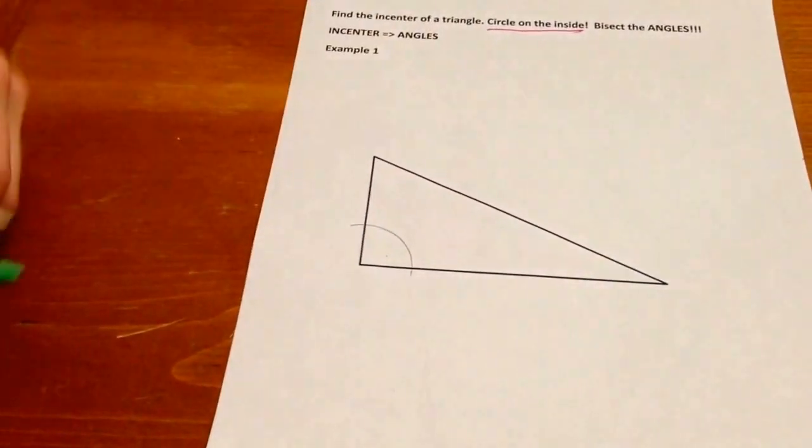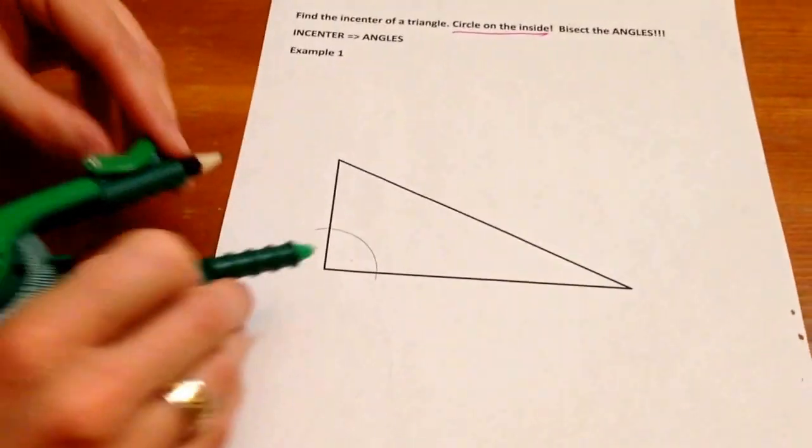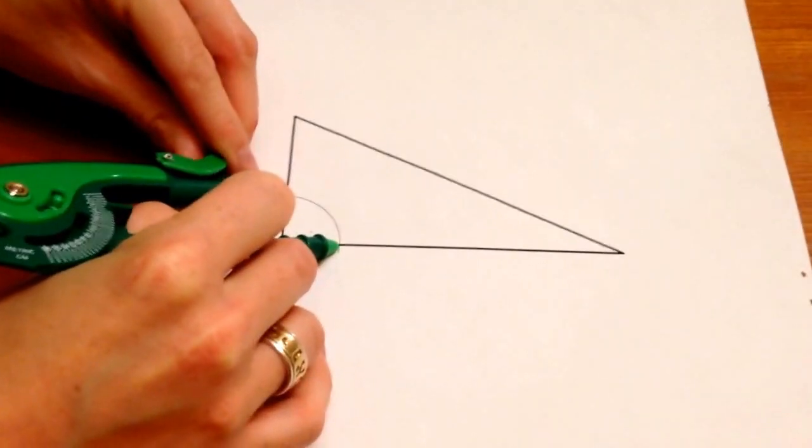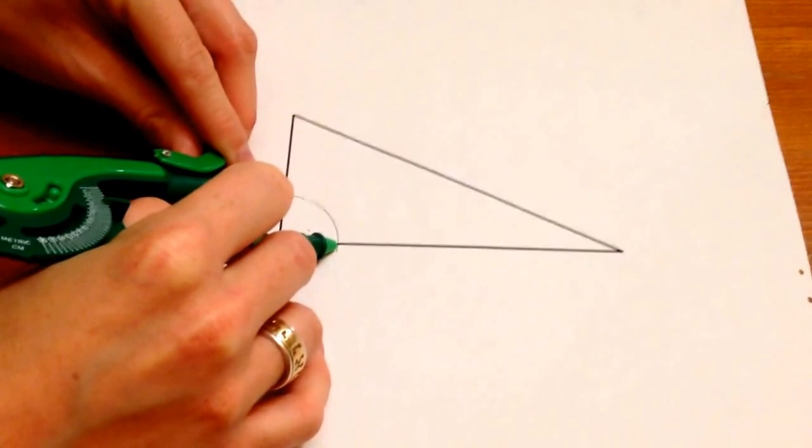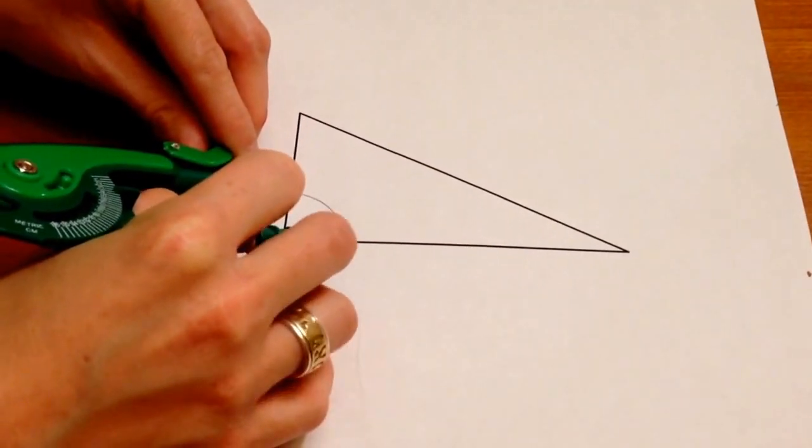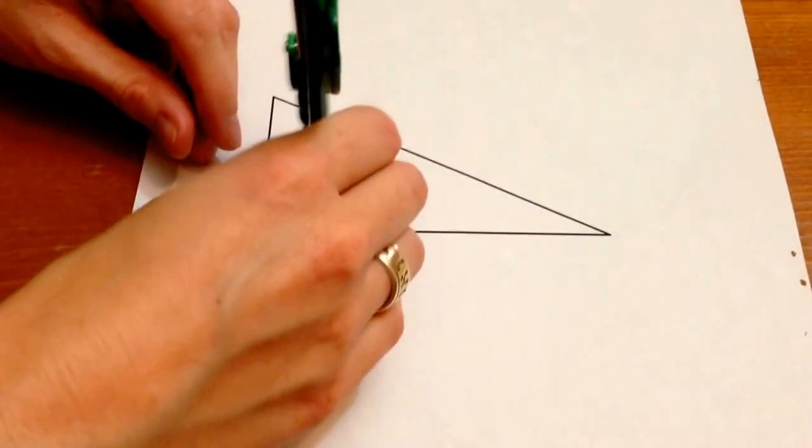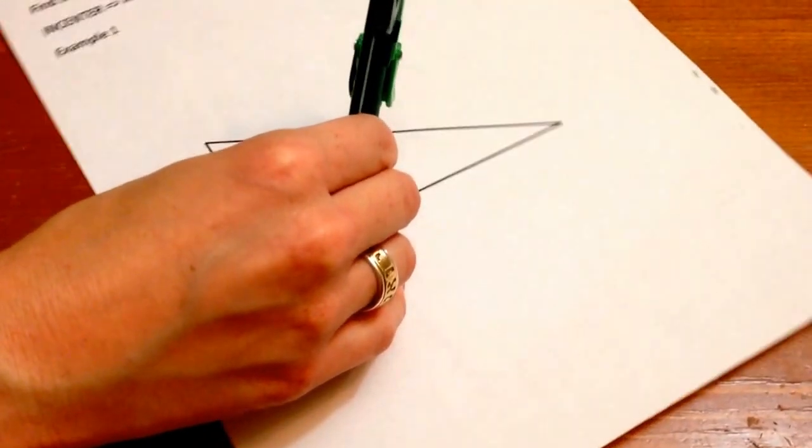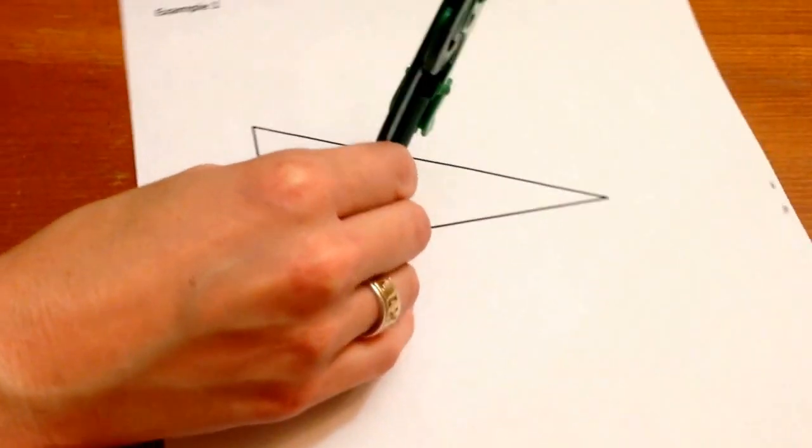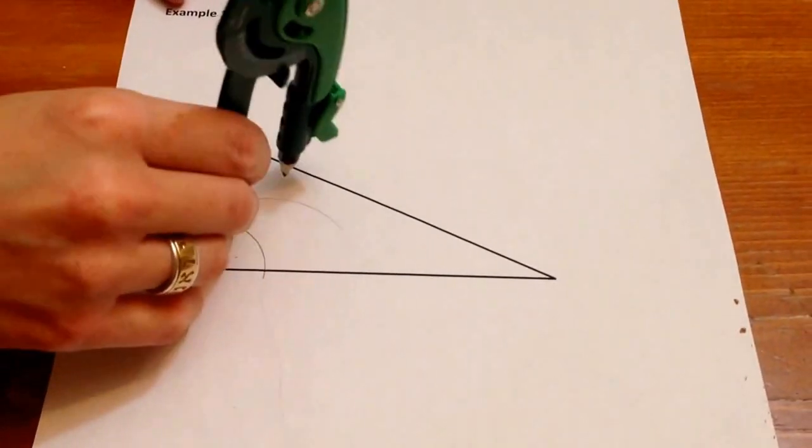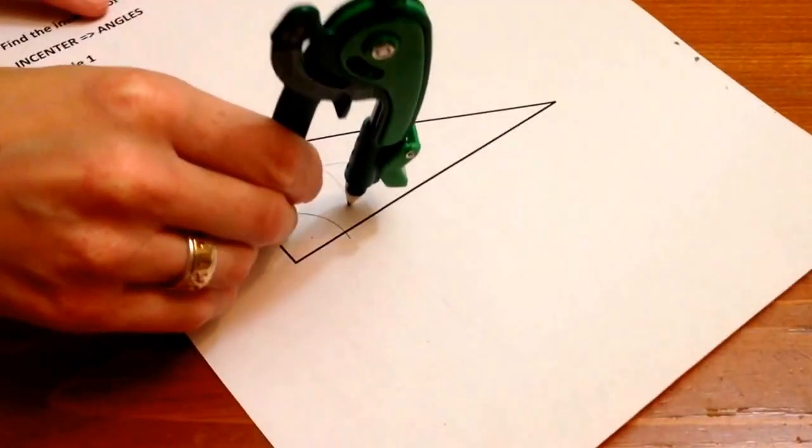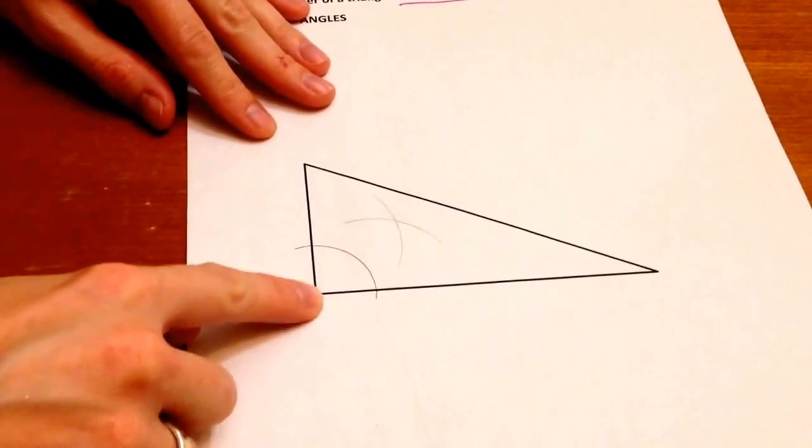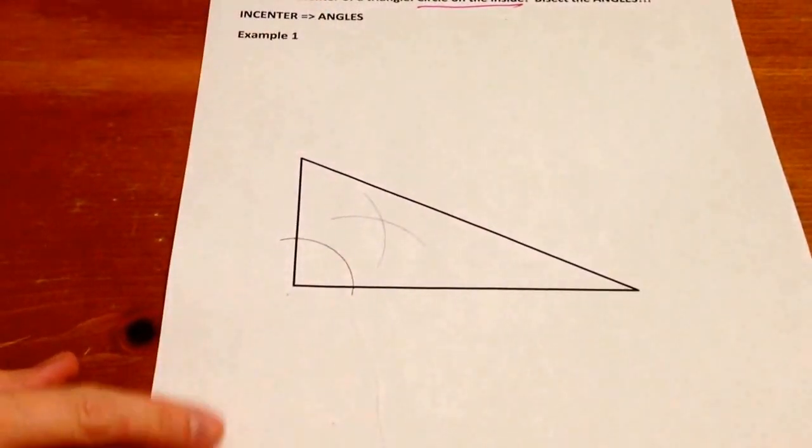Now that you have that semicircle, what you're going to do is open your compass and place it on both of the ends of that semicircle that you made where it meets the triangle and lock it into place. Put your metal piece down and make a little semicircle on one side. Put the metal piece down on the other side, make a little semicircle, and where those two cross, where these two cross and where it meets the corner here, that's where we're going to make our line.